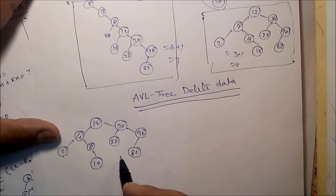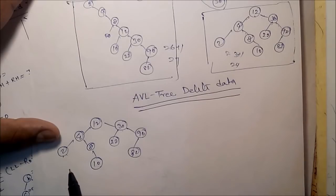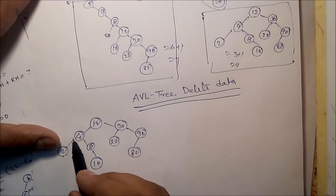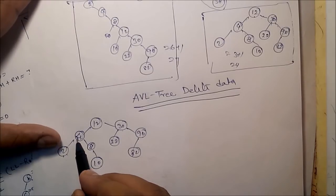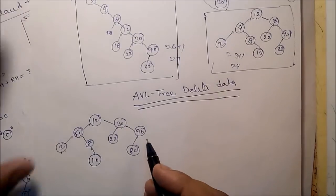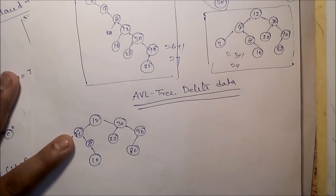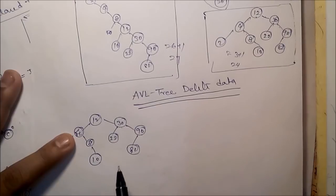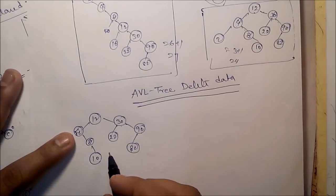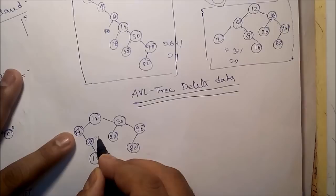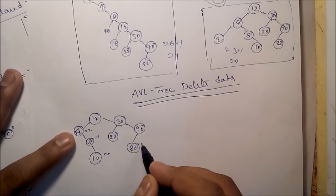First case: if you want to delete a leaf node, suppose you want to delete node 2 — the left child of 4. If you delete this node, put null in the left part of 4. After deletion the tree will look like that. Now we have to recalculate the height difference. Here it is 0, here it is 1, here it is 2.